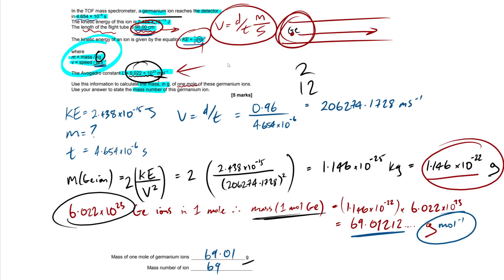That's the end of the video. Just remember these two equations: equation one (KE = ½mv²) is given to you; equation two (velocity = distance/time) is not, so memorize it. If you forget, you can work it out from the units: meters divided by seconds. Also remember: mass in mass spec comes out in kilograms — unique case. The length of the tube equals distance, which must be in meters, not centimeters. Subscribe for future maths and science content, and best of luck in your exams!